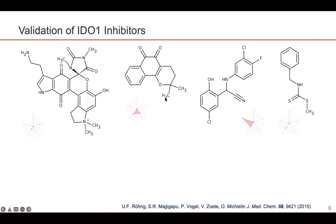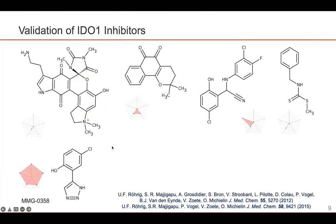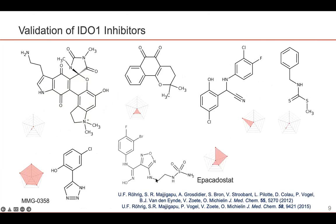Going back to the four compounds that I had shown before, we can see that indeed those have very small red surfaces in this validation pentagon, while one compound that we published in 2012 shows very good properties in this assessment. Also epacadostat, the clinical compound that I mentioned before, just fails one of the three filters but looks rather good in this test. I think this validation really helped to clean up a bit of the literature and to focus on more valid drug-like structures in the years following the publication of this review.